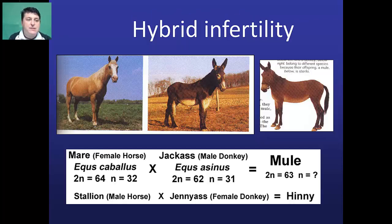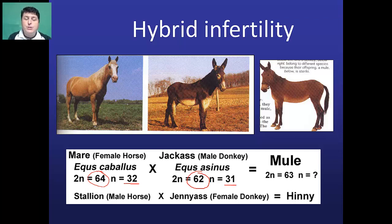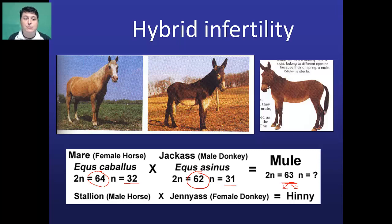One explanation comes from looking at what happens when a horse and a donkey reproduce. Horses have a diploid number of 64, while donkeys have a diploid number of 62. As a result of meiosis and the formation of haploid gametes, the horse will have 32 chromosomes in their gametes and donkeys will have 31. During fertilization, when the two haploid gametes fuse to create the first fertilized egg, the diploid number is actually going to be an odd number, which is very difficult to split evenly in a meiotic event. As a result, mules are typically not able to interbreed and create new offspring.